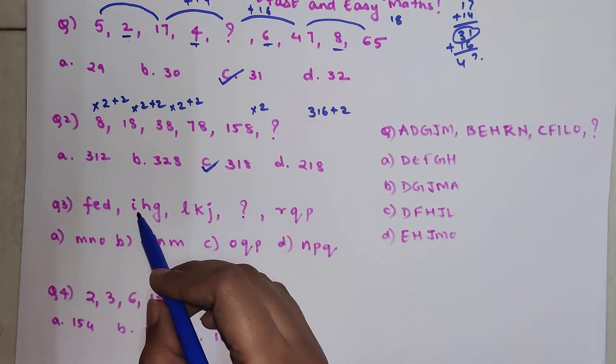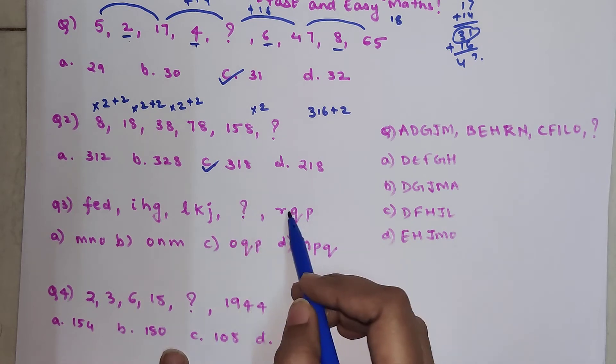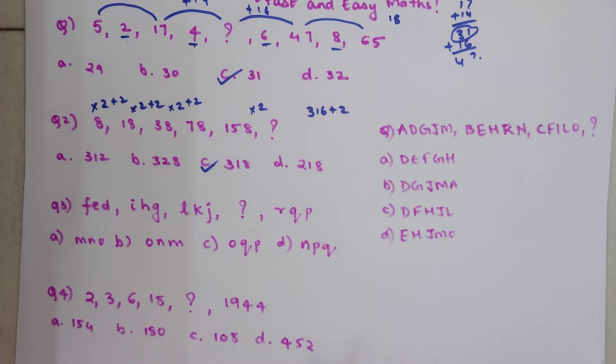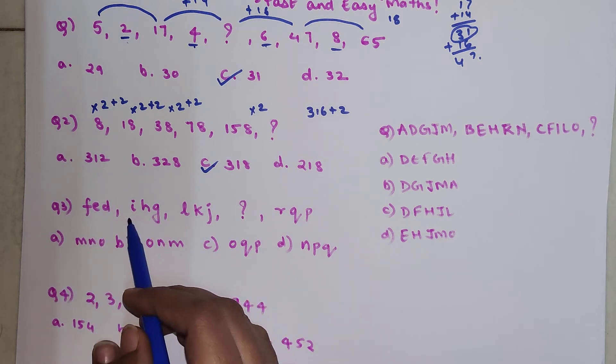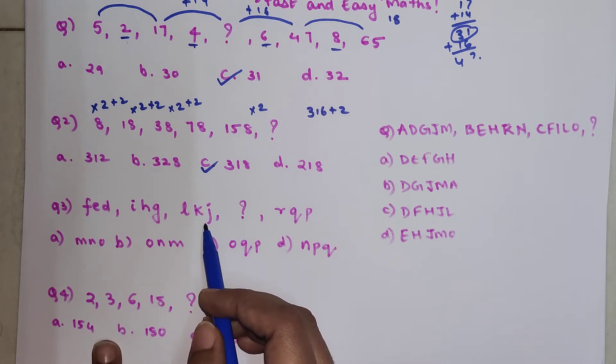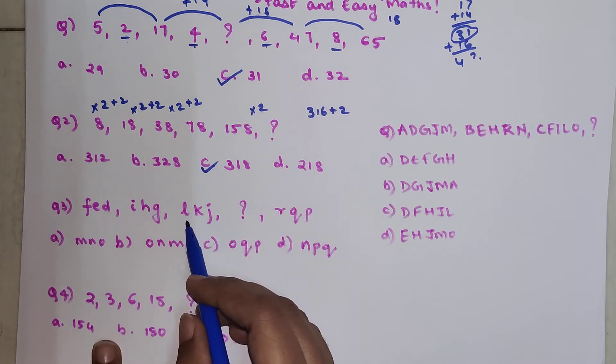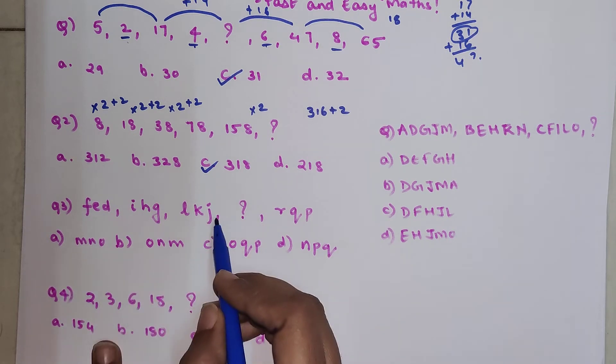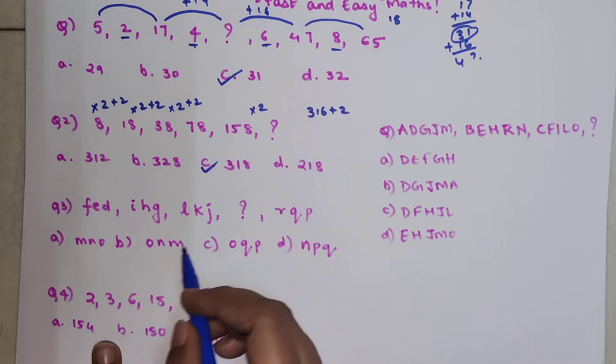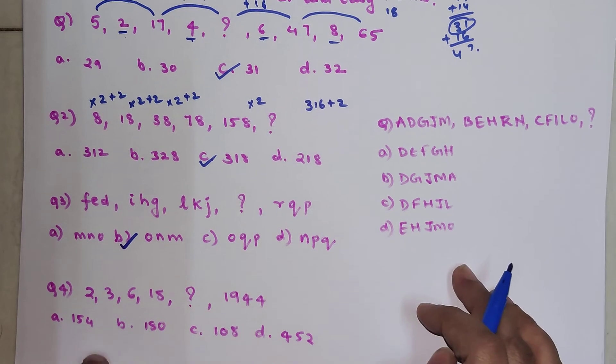The next one is FED, IHG, LKJ, then something we have to find out, and RQP. If you read all of these elements instead of reading left to right, let's read them right to left. So we have DEF, then GHI, then JKL, then we have PQR. After L, what we should have had is M, N, O. But understand, don't select this option because all the elements are written in reverse. So we will have M, N, O like this, reading from your right. Option B is your correct option.